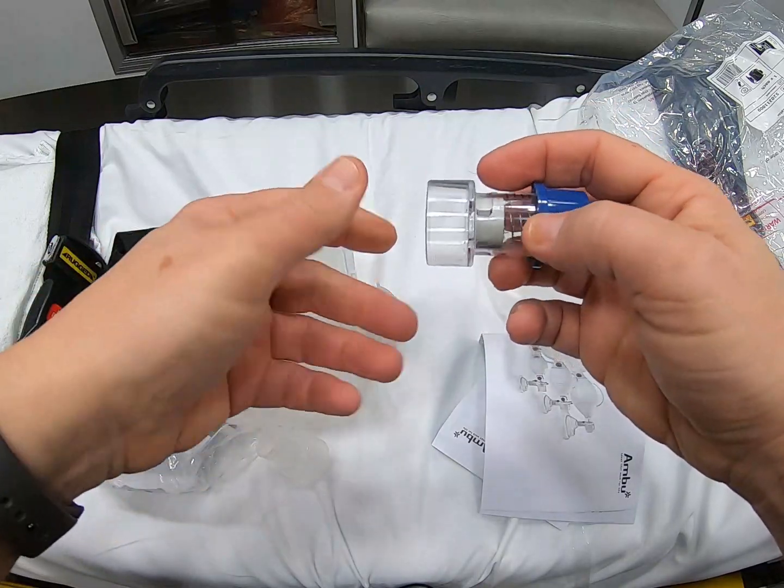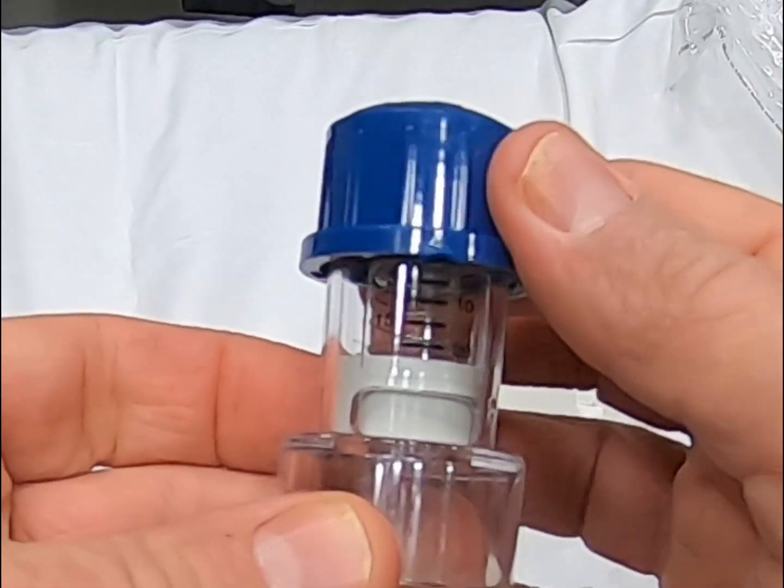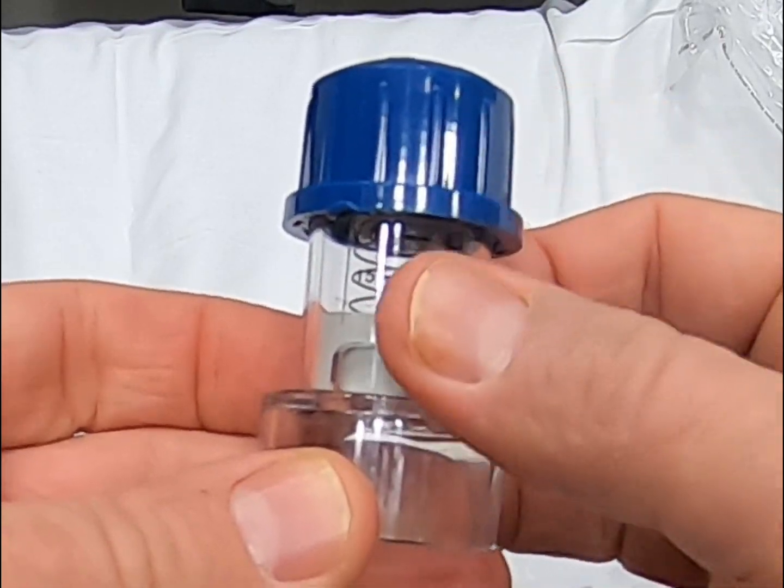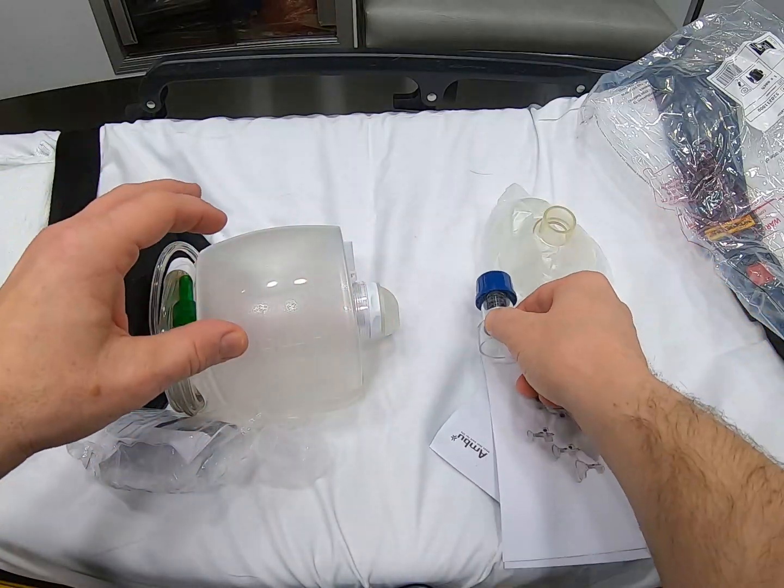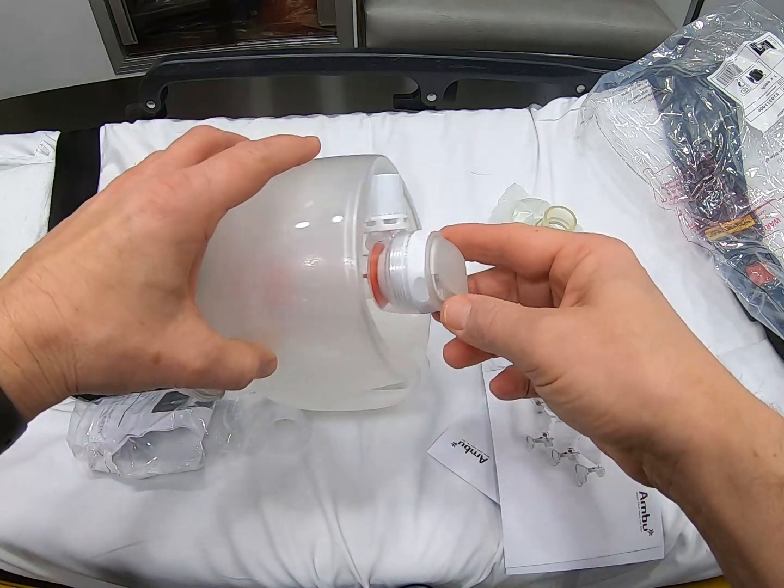You will notice that right in here has the PEEP settings, and this is just twisted. We can set that down and then you have your bag valve, fresh out of the bag.